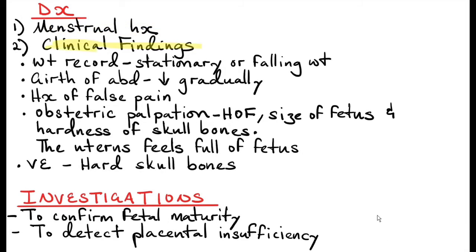Clinical findings in a post-term pregnancy include the patient's weight remaining the same or reducing compared to previous weight, and the girth of the abdomen reducing gradually due to reduced amniotic fluid. The patient may have history of false labor pains which eventually stopped. On obstetric palpation, you examine the height of fundus and estimated size of the fetus, and find hardness of skull bones. The uterus feels full of the fetus because of reduced amniotic fluid.